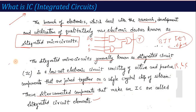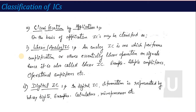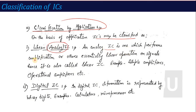Now let's look at the classification of IC. The first classification is by application. On the basis of application, ICs are classified as analog IC and digital IC. An analog IC is one which performs amplification and other essentially linear operations on signals — hence it is also known as a linear IC. Examples include simple amplifier ICs and operational amplifiers.